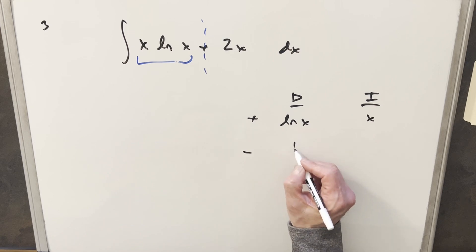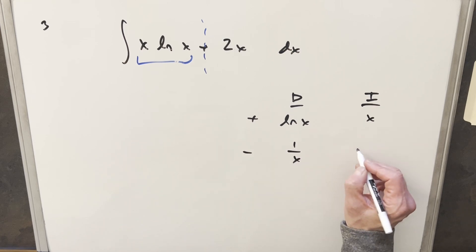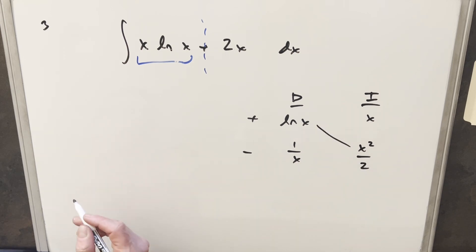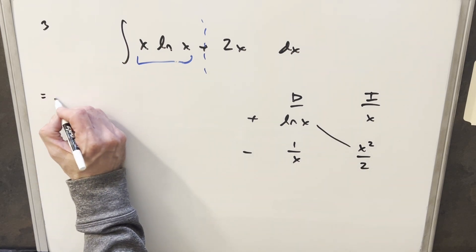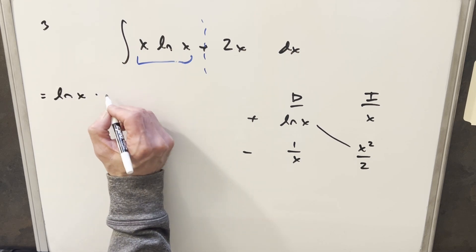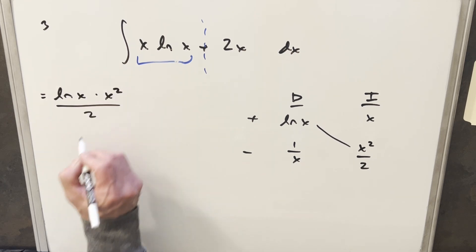Derivative lnx is going to be 1 over x. Integral here is going to be x squared over 2. So a part of our solution right here on the diagonal, we're going to have lnx times x squared. We'll write it all over 2.